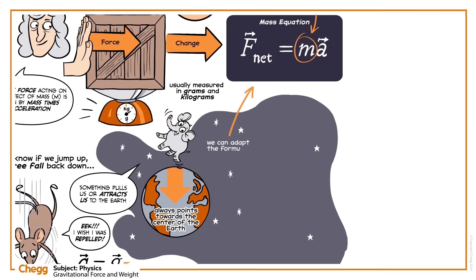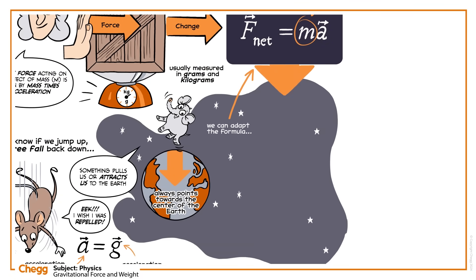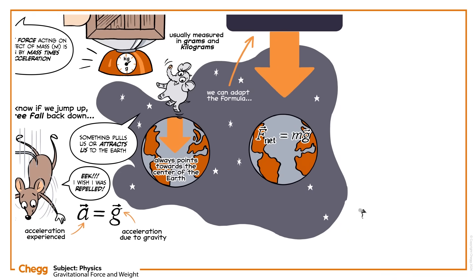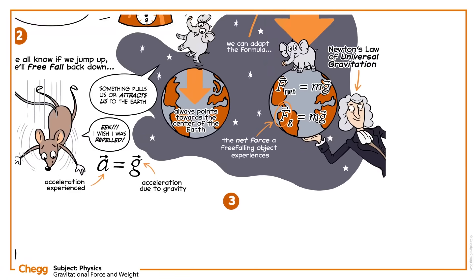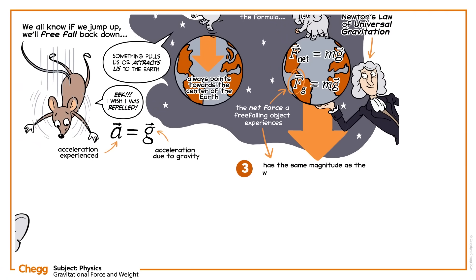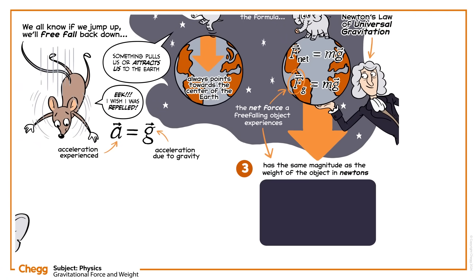So we can adapt the formula F equals ma, replacing A with G. According to Newton's law of universal gravitation, the net force a free falling object experiences, F sub g, is equal to the mass of the object times the acceleration due to gravity, G. Fg has the same magnitude as the weight of the object in Newtons, so we can write the equation for weight as W equals mg. As you can see, weight is a measure of gravitational force that depends on two factors: mass and acceleration due to gravity, G.